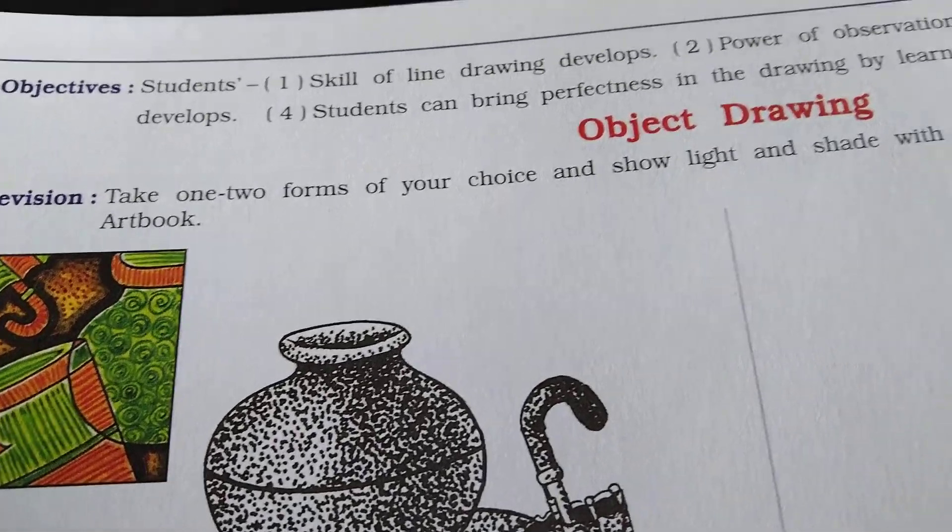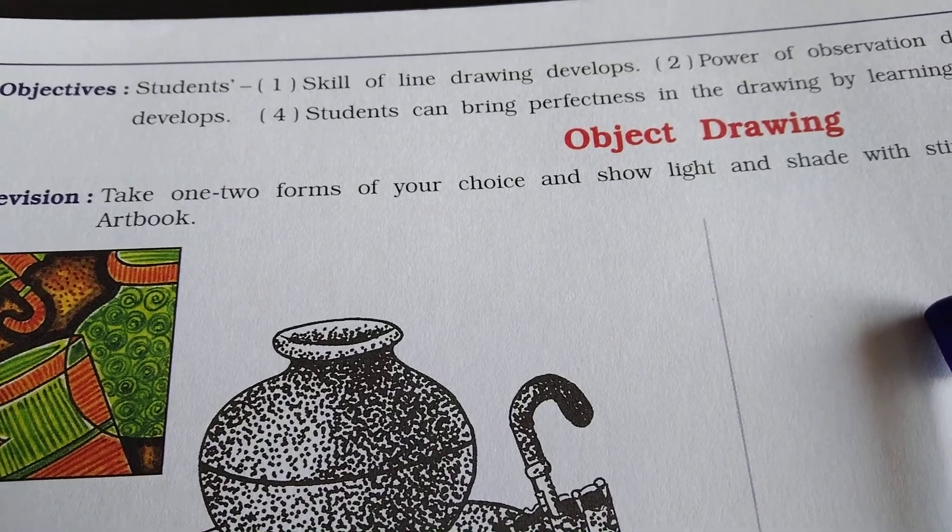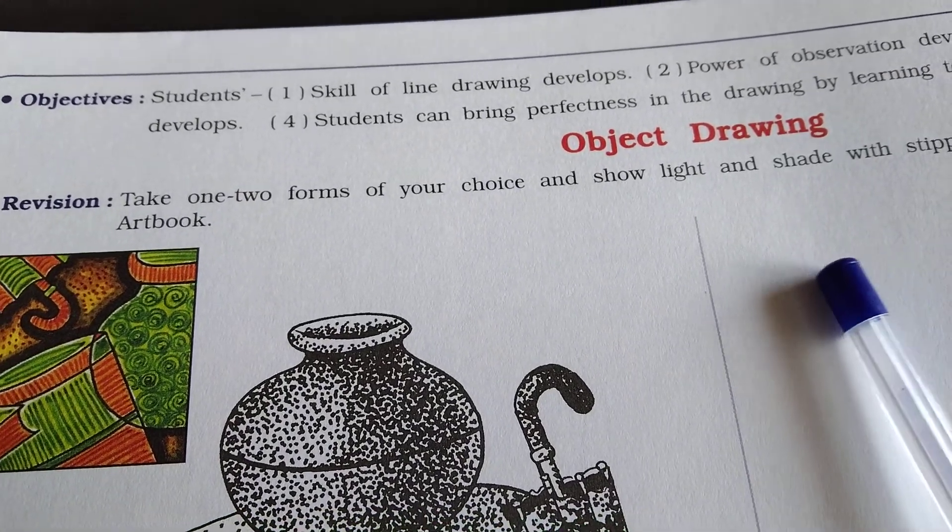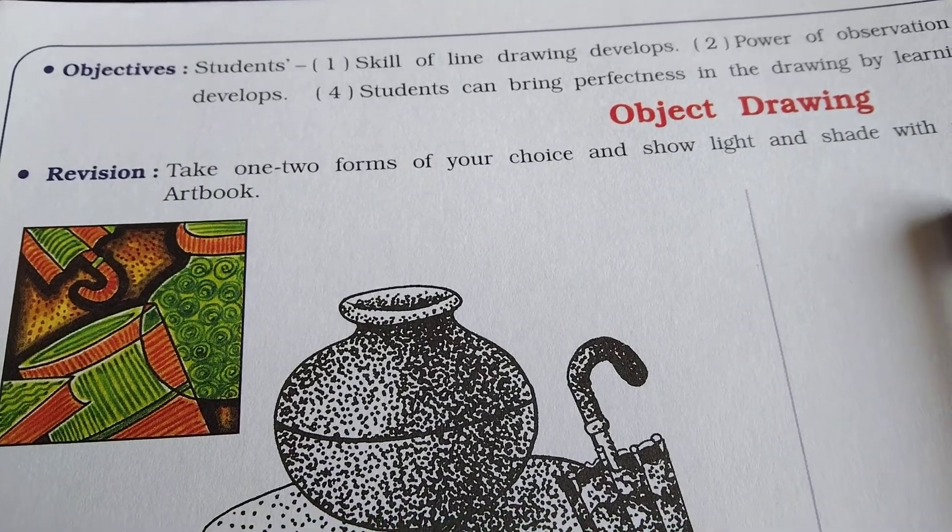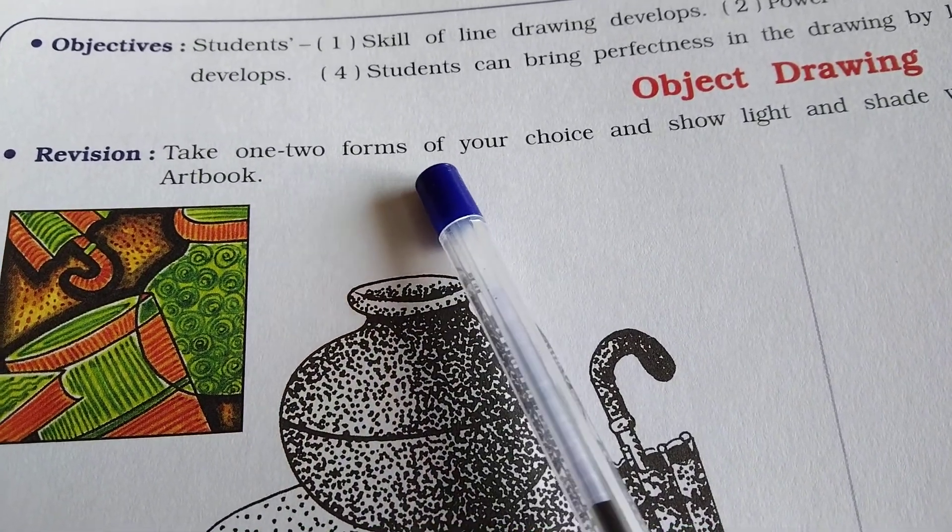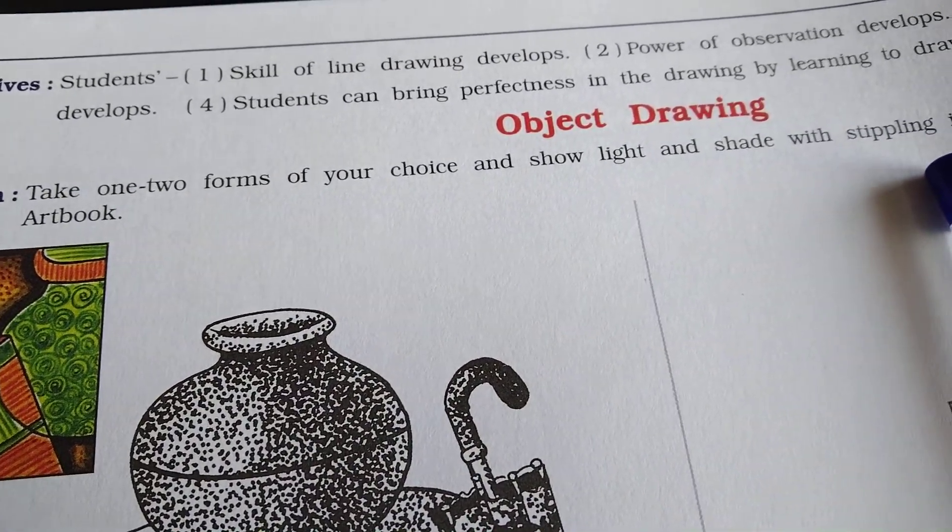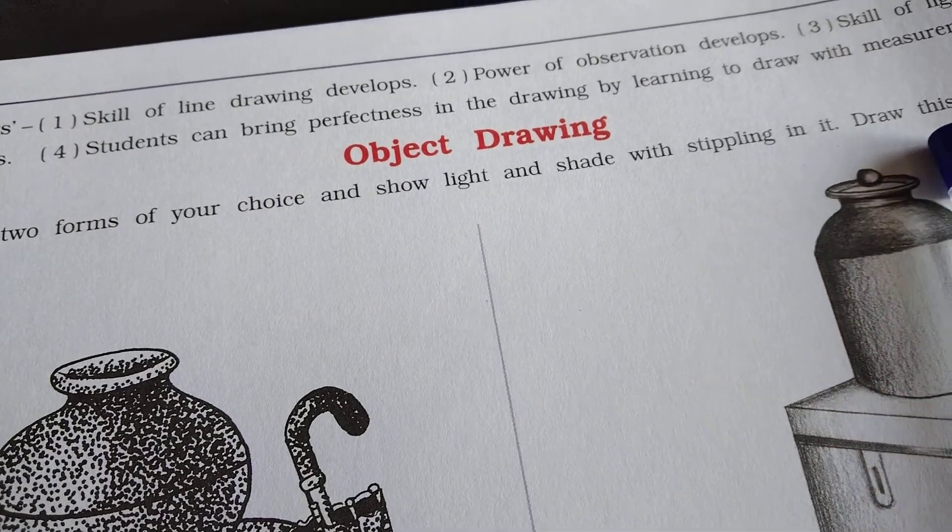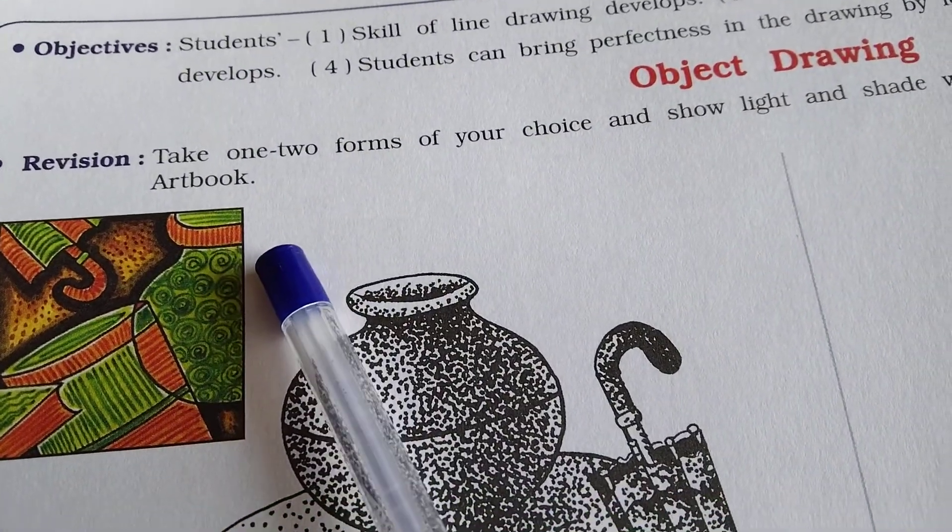Hello students, today we will study about drawing. Object drawing. Object drawing takes one or two forms of your choice and shows light and shade with stippling in it. Draw this picture in your art book.